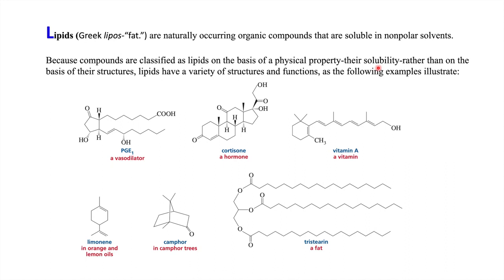We classify lipids on the basis of their physical properties like solubility. It is difficult to classify them on the basis of structure because lipids bear a variety of structures and functions. For example, PGE1 is a vasodilator, cortisone is a hormone, vitamin A is a vitamin, limonene is present in orange and lemon oil, camphor is present in camphor tree, and tristearin is a fat.